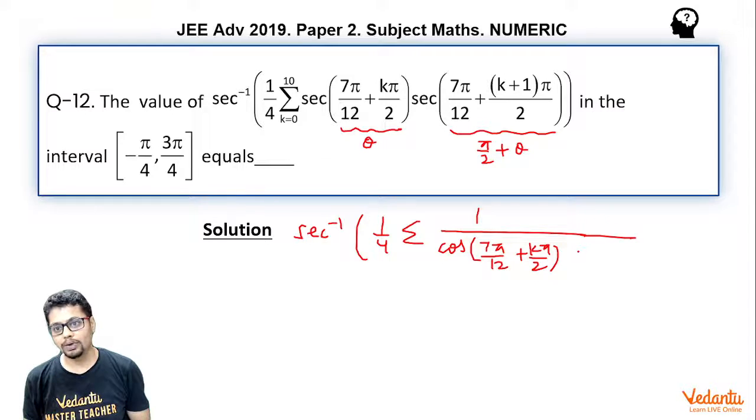And here cos pi by 2 plus theta is essentially minus sine theta. So, you may say minus sine and this theta essentially is 7 pi by 12 plus k pi by 2.